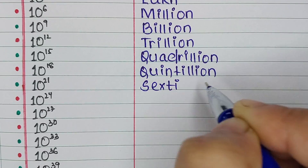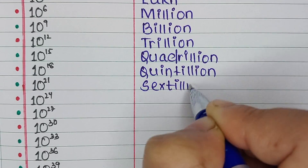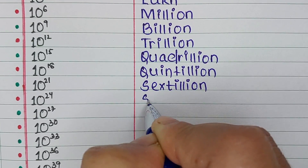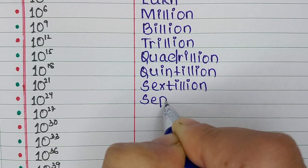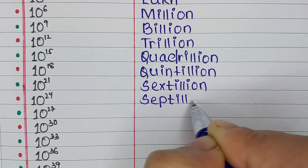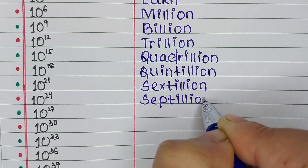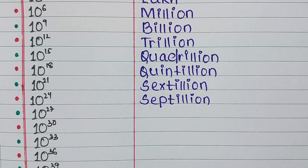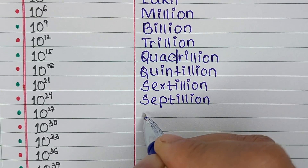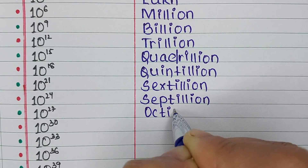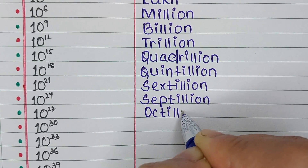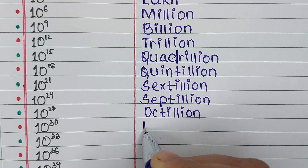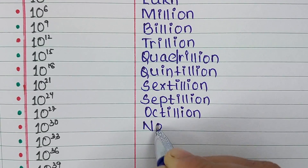Next is 10 to the power 21. It is named as Sextillion. Next is 10 to the power 24. It is Septillion. Next is 10 to the power 27. The name is Octillion.